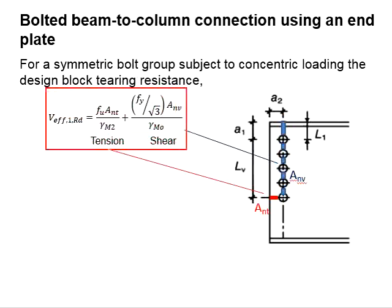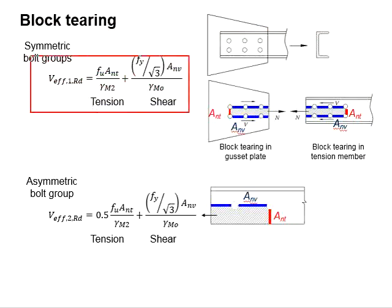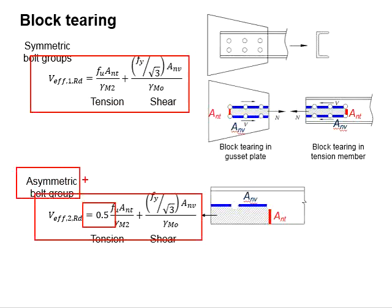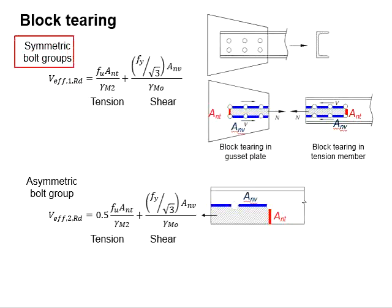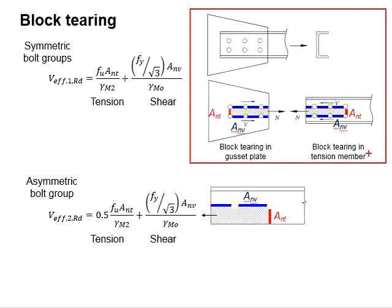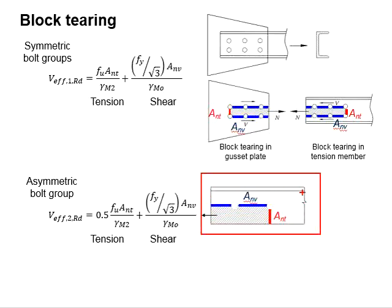The total resistance is checked against the shear load. For adequate block tearing resistance, the resistance must be greater than the shear load. Note that for an asymmetrical bolt group, which may cause a rotational effect on the connection, the tension component is reduced by half, unlike the symmetrical bolt group case.